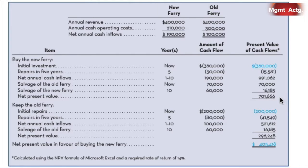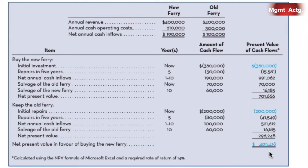Buying the new ferry has a net present value of $701,666. Comparing that to keeping the old ferry: we spend $200,000 now, another $80,000 in five years, generate $100,000 per year for years one through ten, and the salvage values net present value is $292,248. The new ferry greatly outweighs keeping the existing ferry by a total of $405,418 in net present value. The decision is simple — sell the old boat and buy the new one.